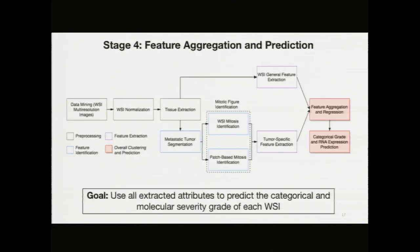So finally, we have all these features — 310 regarding mitoses and 1,027 from general structural extraction — that characterize the entirety of the whole slide image both on a minute biological attribute level and a general structural level, driven by machine learning models that can use those images to make classifications on an unprecedented scale. The next step of my pipeline, feature aggregation and prediction, used all these extracted attributes to predict the categorical and molecular attributes of each whole slide image.